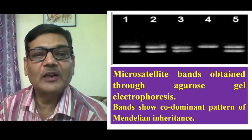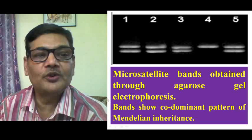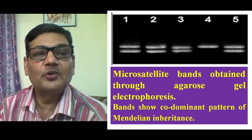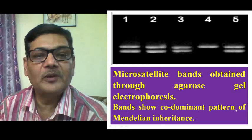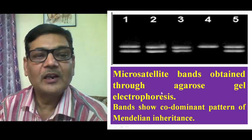Microsatellite bands obtained through agarose gel electrophoresis are shown in this diagram, and these bands show a co-dominant pattern of Mendelian inheritance.